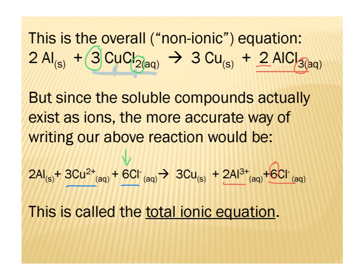You may be asking: what happened to the solid aluminum? Because it is solid aluminum, it does not dissociate. Therefore, when we write our total ionic equation, it stays as solid aluminum. Similarly, for the copper on the product side, because it's a solid copper metal, it does not dissociate. So we continue to write the copper solid as Cu solid on the product side. Now we have our total ionic equation, where we have taken any soluble ionic compound and dissociated them into their corresponding ions.